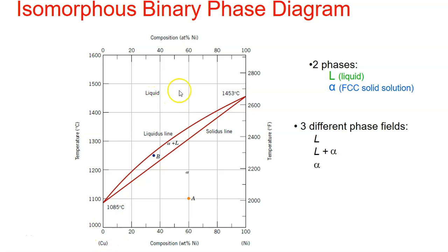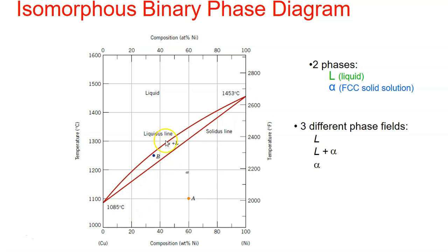The liquid region L is a homogeneous liquid solution composed of both copper and nickel. The alpha phase at the bottom is a substitutional solid solution consisting of both copper and nickel atoms, with an FCC crystal structure. The two boundary lines are the liquidus line and the solidus line. Above the liquidus, everything is liquid; below the solidus, everything is FCC solid solution.